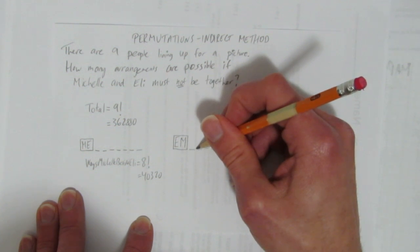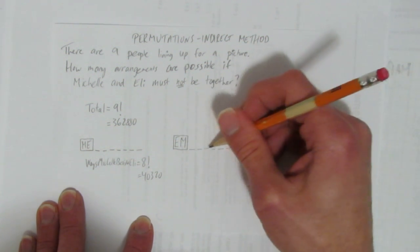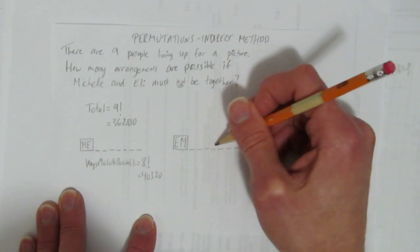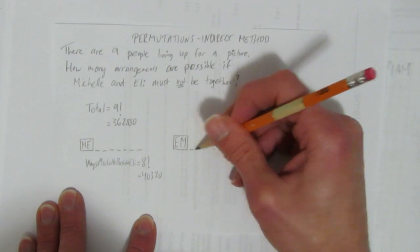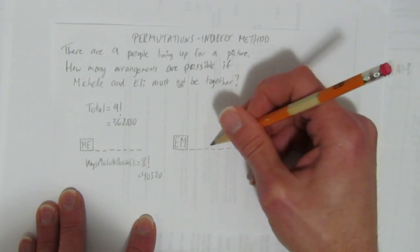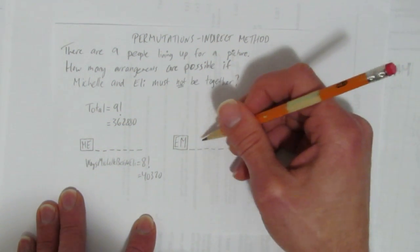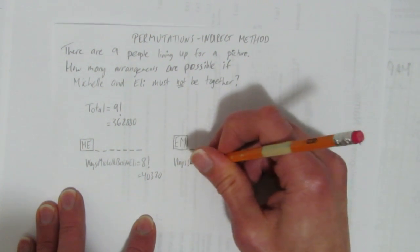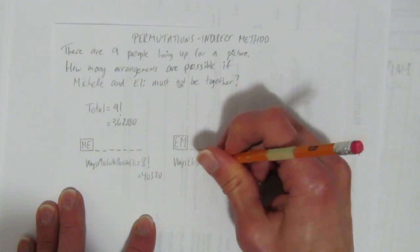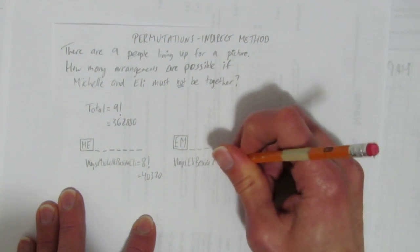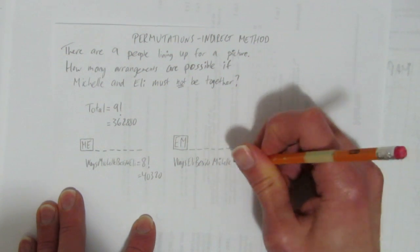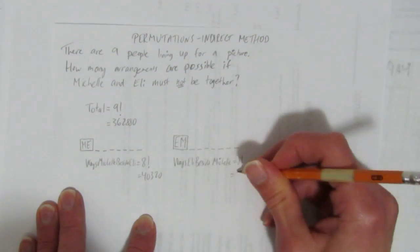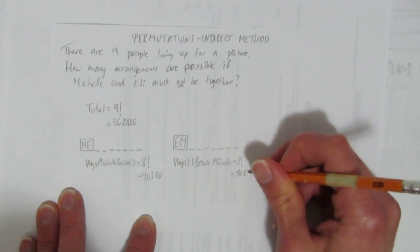And so it could be Eli and Michelle are here, or it could be they're in between these two people, or in between these two people, and it could be any of those possibilities. Just like before, you have eight things to arrange, and all of them could be arranged different ways. Each of these are individual people that could be arranged. So really what you just have is eight items. So I'm going to write ways Eli beside Michelle. And again, that's eight factorial, which of course is the same as last time, 40,320.